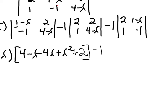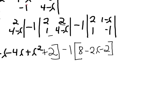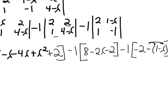I have minus 1 in front of that next determinant. Multiplying out: 2 times (4 minus lambda) gives 8 minus 2 lambda, and then minus 1 times 2 gives minus 2. And for the last determinant, I have this negative 1 out front, then 2 times negative 1 is negative 2, minus 1 times (1 minus lambda). Be sure it's minus that whole (1 minus lambda) — that negative distributes to both parts.